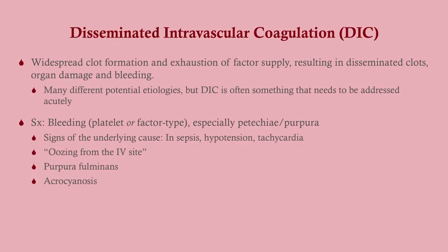DIC — disseminated intravascular coagulation — involves widespread clot formation and exhaustion of factors, platelets, and everything else. This results in disseminated clots causing thrombosis and organ damage. Because all factors and platelets are being used up, significant bleeding also occurs. There are many underlying causes, and we need to identify them. Presentation includes both platelet-type and factor-type bleeding, so petechiae and purpura are very common.